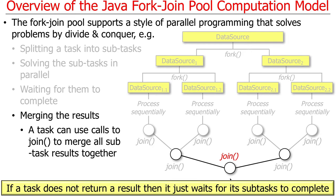Not every use of the ForkJoin framework requires subtasks that return results. You can have subtasks that don't return a result and get the result some other way. The ForkJoin framework has different classes for this: RecursiveTask, which returns subresults through a return value, and RecursiveAction, which does not have a return value.